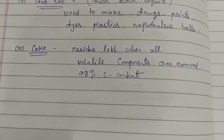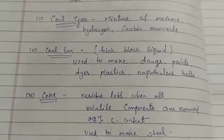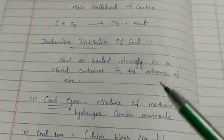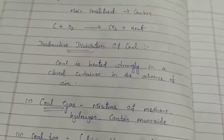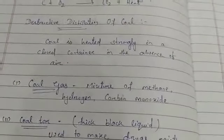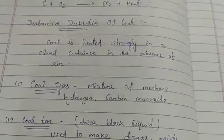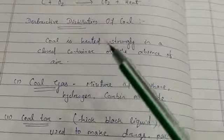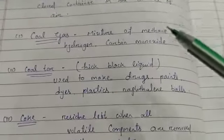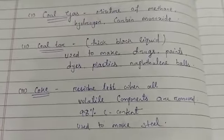Coke is also used to make steel. So these are the useful substances we get during the destructive distillation of coal — coal gas, coal tar, and coke — which have many uses in our day-to-day life.